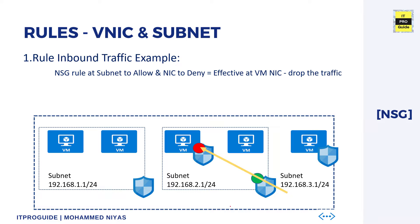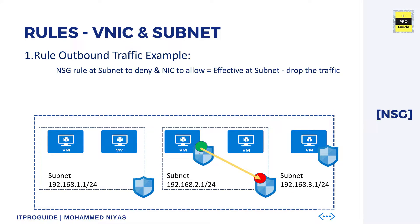You may wonder which rule is effective when you have rules on both a network interface and a subnet. For inbound traffic, it reaches the subnet first. If the subnet rule allows it, traffic proceeds to the network interface. If the NIC has a deny rule, that last inspection drops the traffic. For outbound traffic, the final inspection happens at the subnet level. So if the VM-level rule allows but the subnet-level rule denies, the packet is dropped.